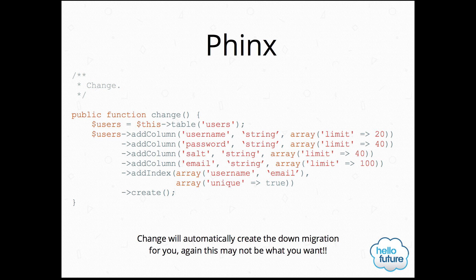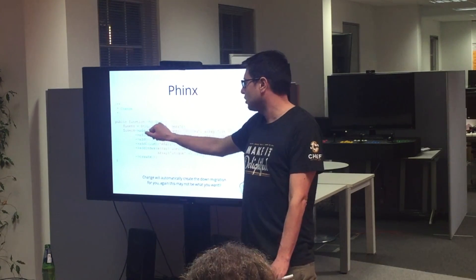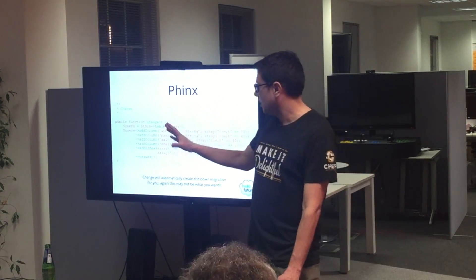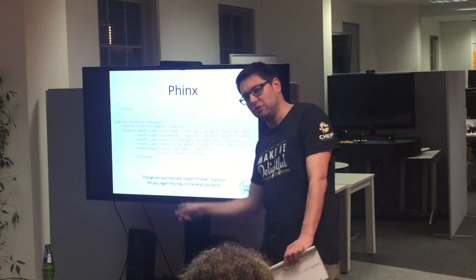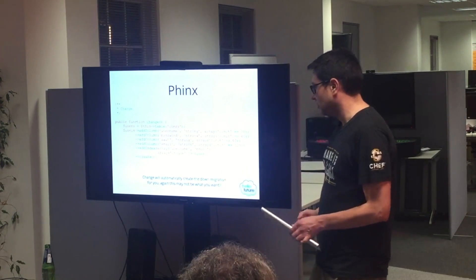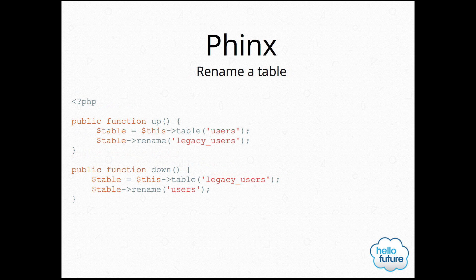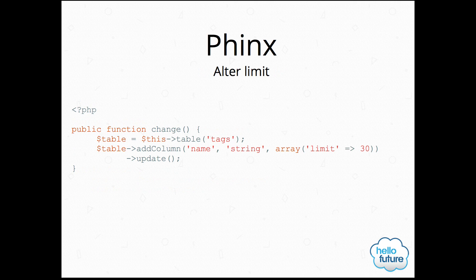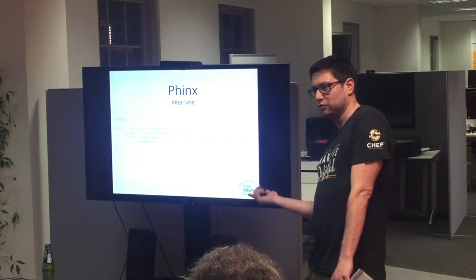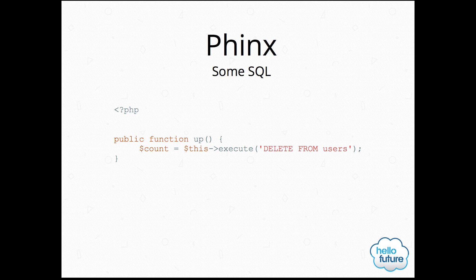The 'change' method is quite a funky feature because it handles the up and down for you automatically. You add the table, and it reverses it — so when you go up it runs this, and when you roll back it does the opposite. You can rename a column, rename a table, alter a limit, run some raw SQL which is quite important.